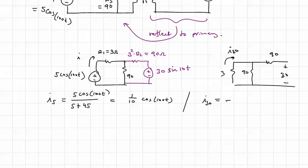And we'll have 90 over 3 plus 90, times the total current flowing through the source. And that total current will be 30 volts cosine 10t, divided by the total resistance, which is the 90 ohms plus the 3 in parallel with 90.